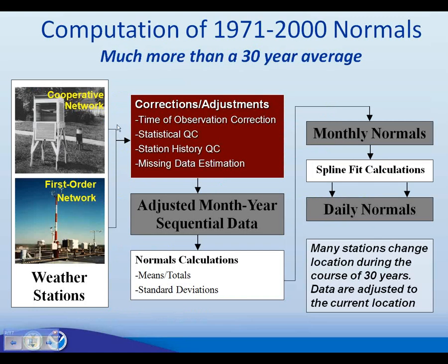I want to go over how we computed the 1971–2000 normals. We started with cooperative network data and some first-order network stations, applied corrections and adjustments to arrive at adjusted monthly year-sequential data, and computed the monthly normals from there. Last time there was a big emphasis on computing monthly normals first, and then going from monthly to daily normals using cubic spline fits. We are not using cubic spline fits at all this time — we are computing normals at the daily scale as much as possible.